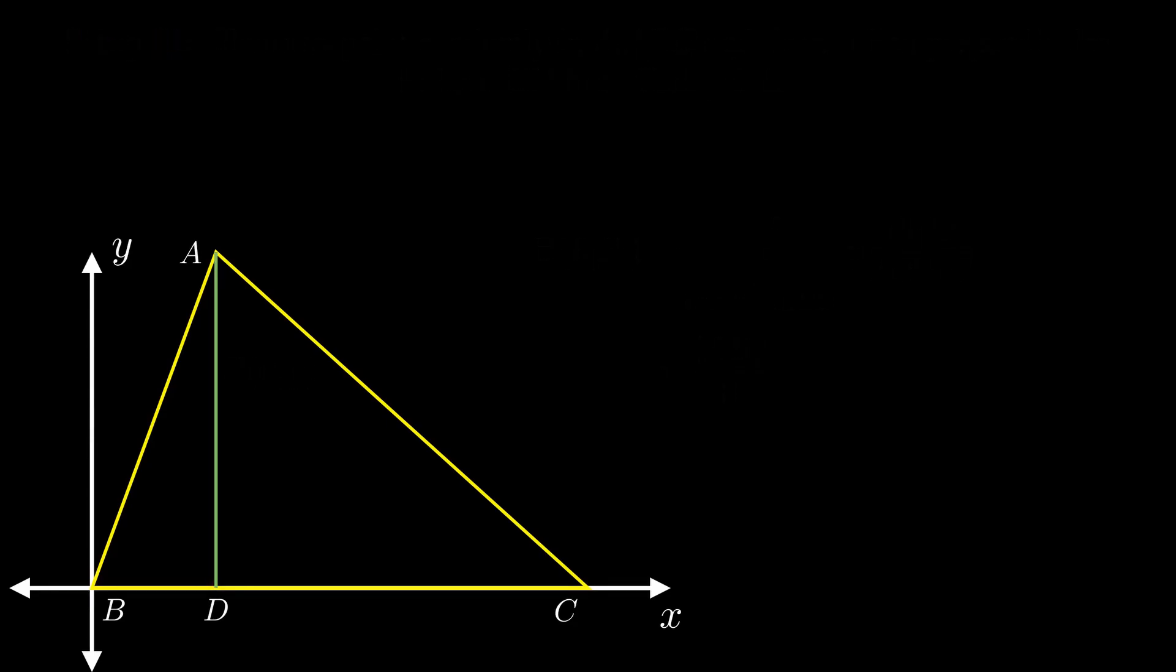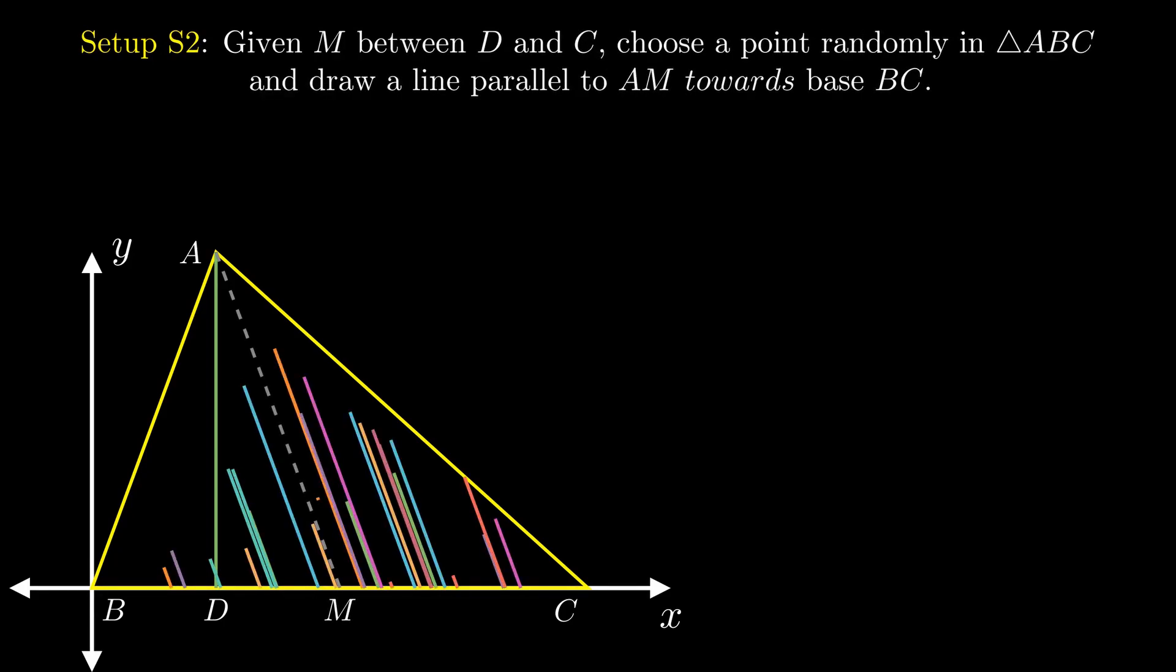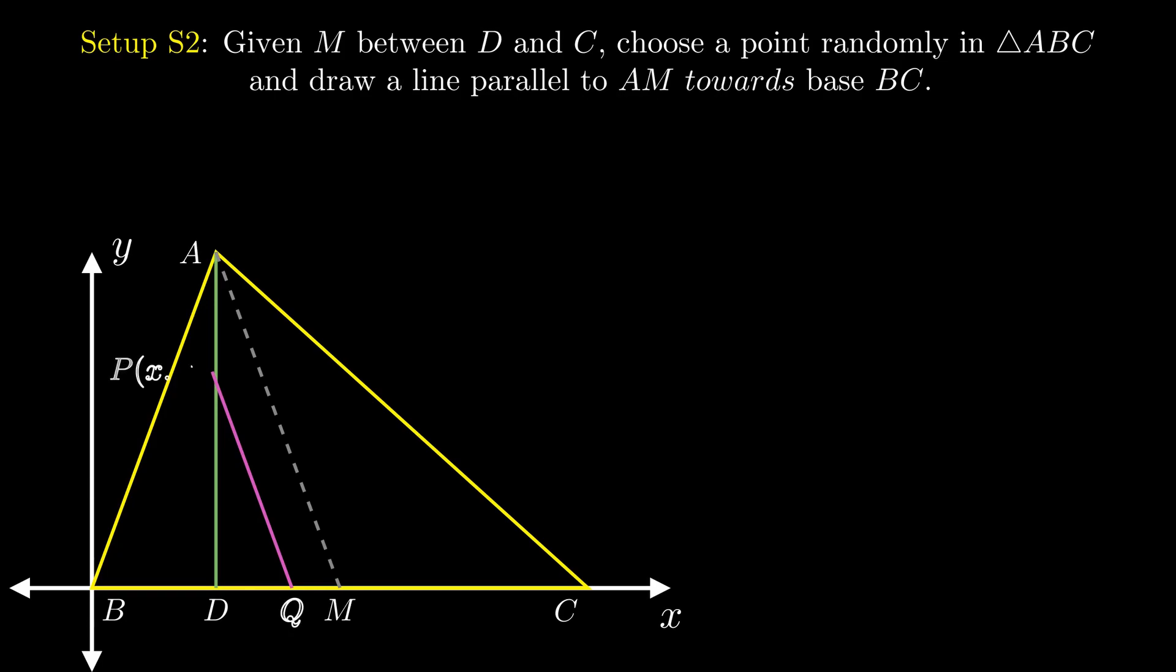For the second setup, let M be a point between D and C. We again choose a point inside this triangle and draw a line parallel to AM towards base BC. Let P be a random point and Q be the point where the random line meets the base BC.